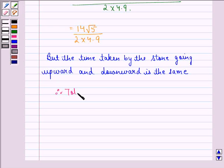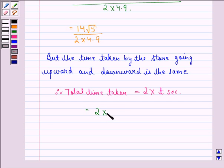Therefore, total time taken by the stone to come back to the ground is equal to 2 × t seconds. That is equal to 2 × 14√5 divided by 2 × 4.9. The 2 gets cancelled with 2 here.